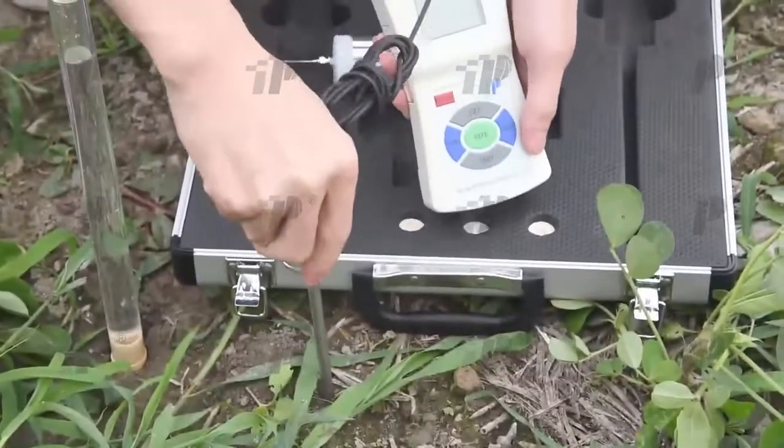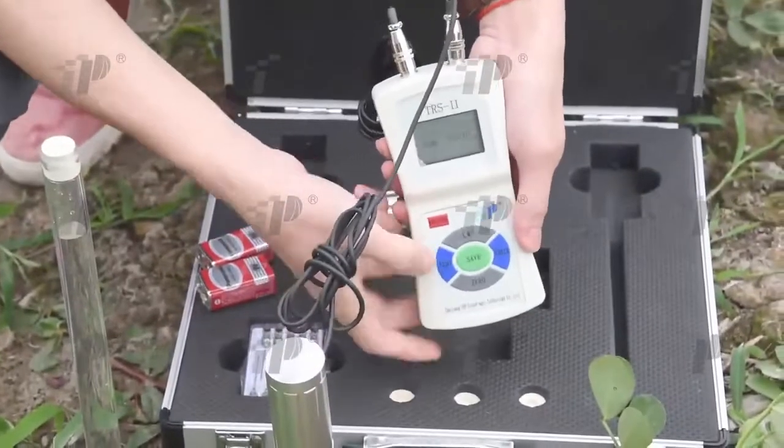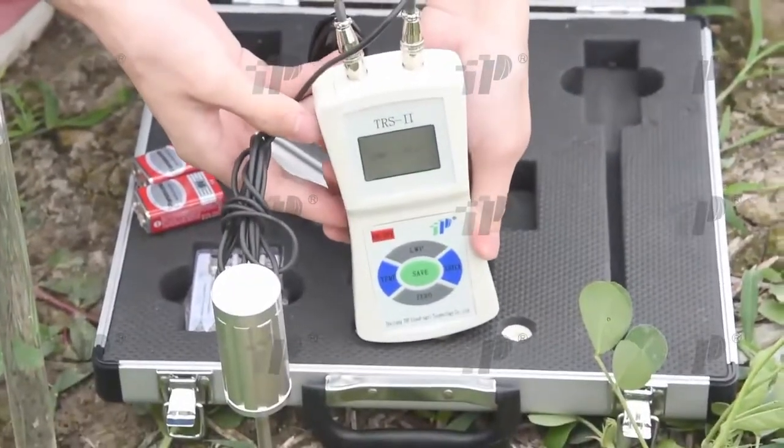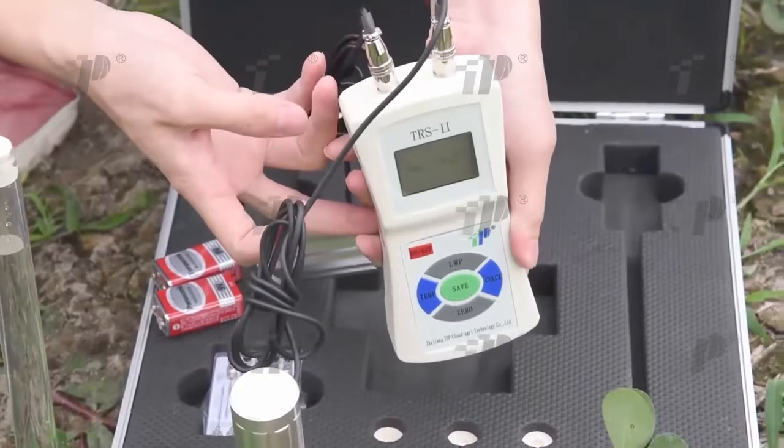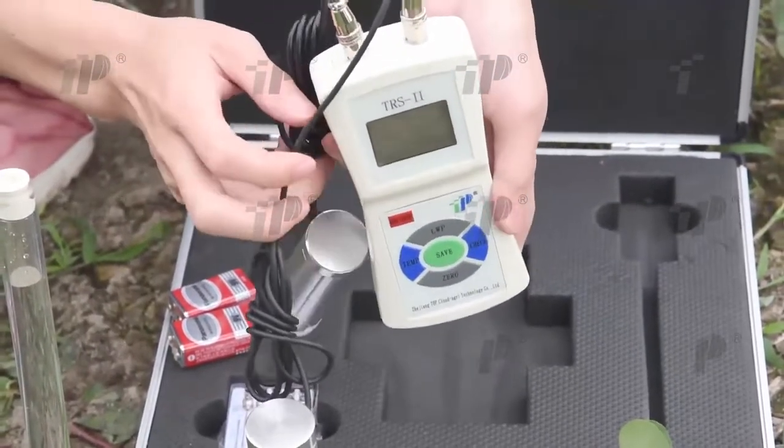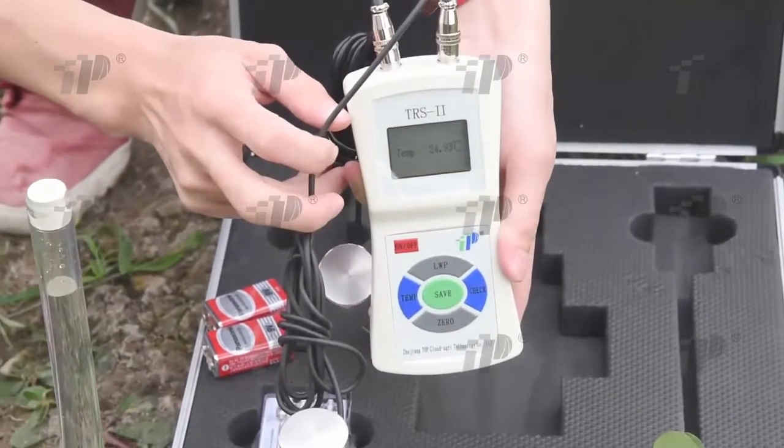Now, let's do the temperature testing. During testing, insert the aviation socket of the temperature sensor to the upper right socket of the displayer. Then turn on the power switch, click the temp button, and insert the top of the temperature sensor to the place which needs temperature measurement.